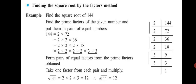So, the square root of 144 equals: from the first pair (2 into 2) we take one 2; from the second pair we take another 2; from the third pair (3 into 3) we take one 3. Multiplying: 2 into 2 is 4, and 4 into 3 is 12. Therefore, the square root of 144 equals 12. To summarize: Step 1 — find prime factors. Step 2 — pair the same numbers. Step 3 — pick one number from each pair and multiply to get the answer.